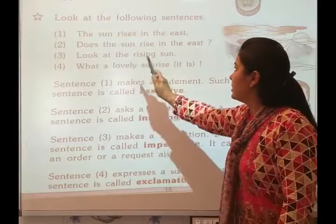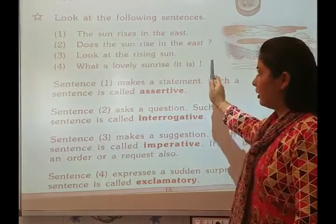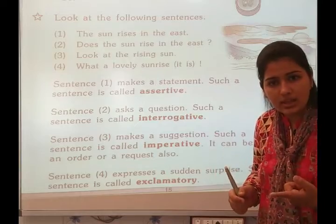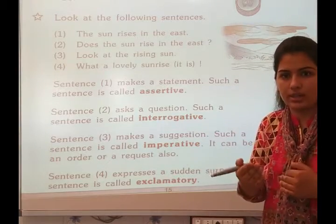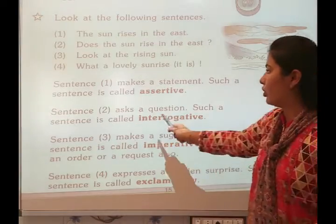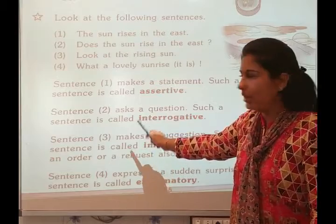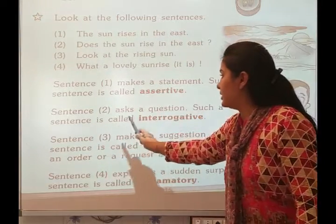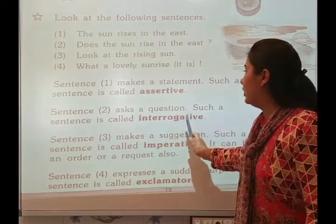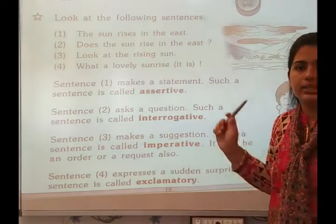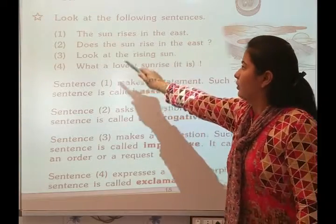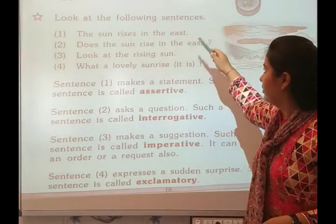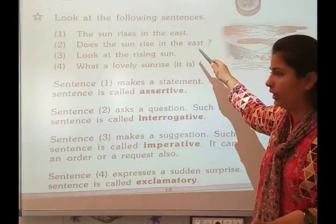Number two: Does the sun rise in the east? This sentence is asking a question. Sentence two asks a question. Such a sentence is called interrogative. So the first sentence is assertive and the second sentence is interrogative.